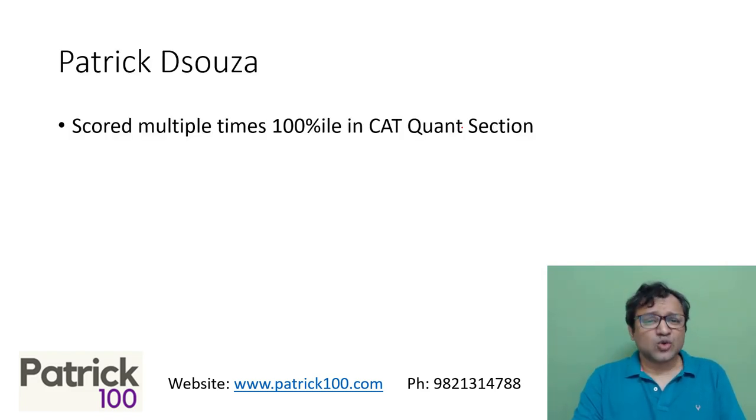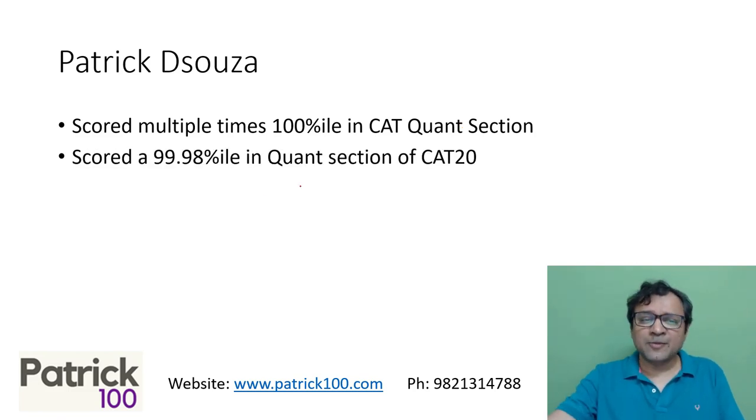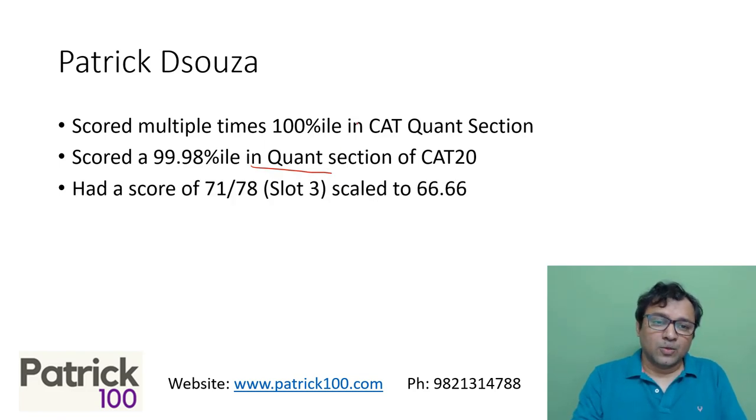My name is Patrick, scored a 100 percentile in QUANT multiple times. In CAT 20, I scored a 99.98 percentile in the QUANT section. My score in slot 3 of the paper was 71 out of 78, scaled to 66.66. That is how the paper was.